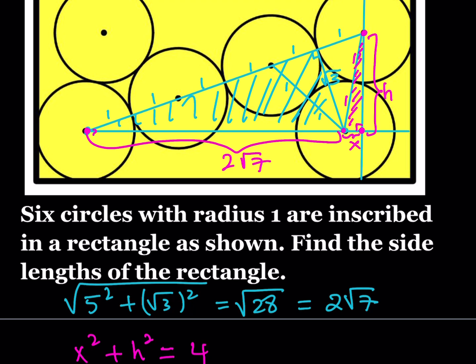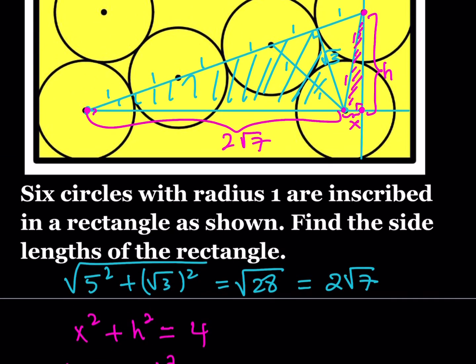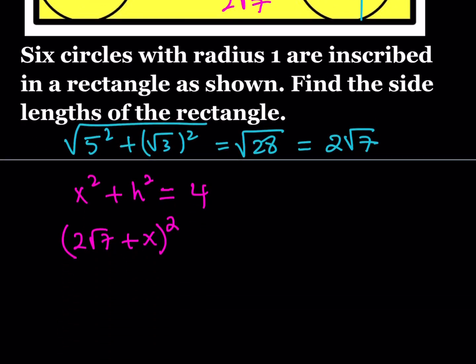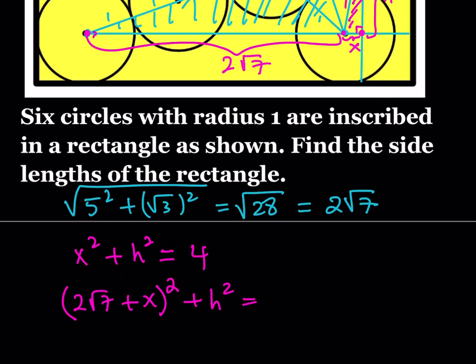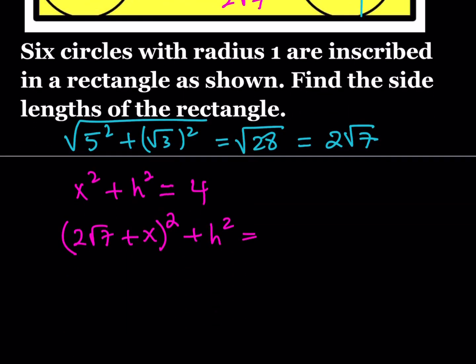I do need another equation, and that equation is going to come from the big picture — this giant right triangle, whose vertices I'm just marking right now. Notice that the base of this big right triangle is 2√7 + X, so that's going to be my base — I'll square that for the Pythagorean theorem. The height is the same, so that's H again, plus H squared. The hypotenuse I can pretty much measure: 1, 2, 3, 4, 5, and 6— all the radii on that line segment. So that's going to be 6, and if you square it, it's going to be 36.